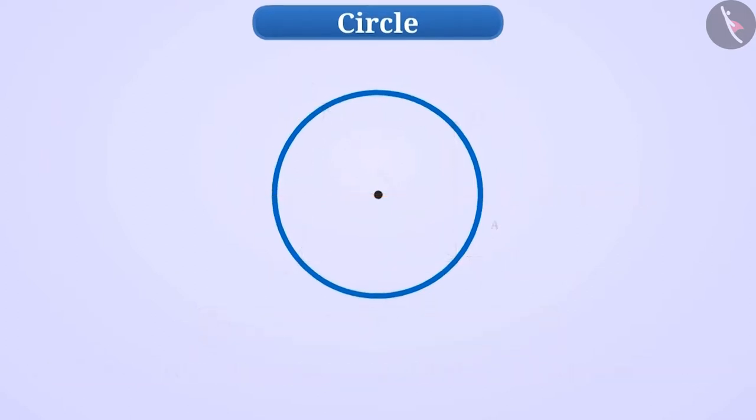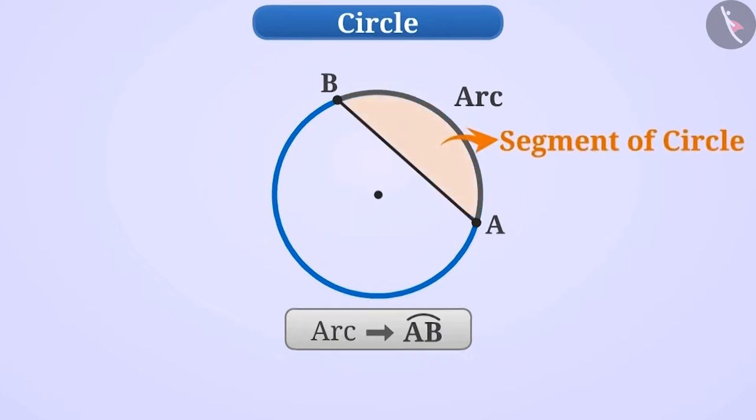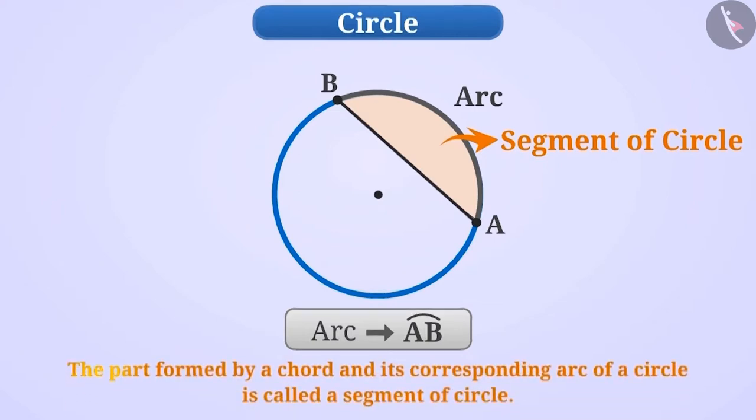Now, look at the part A to B of the circle. Any part of the circle is called its arc. Like the part shown here is arc AB. If we connect AB with a straight line, then the line AB and arc AB together form a segment of circle. That is, the part formed by a chord of a circle and its corresponding arc is called the segment of circle.